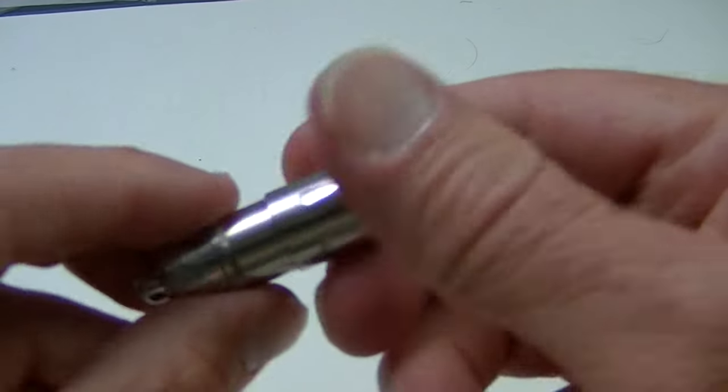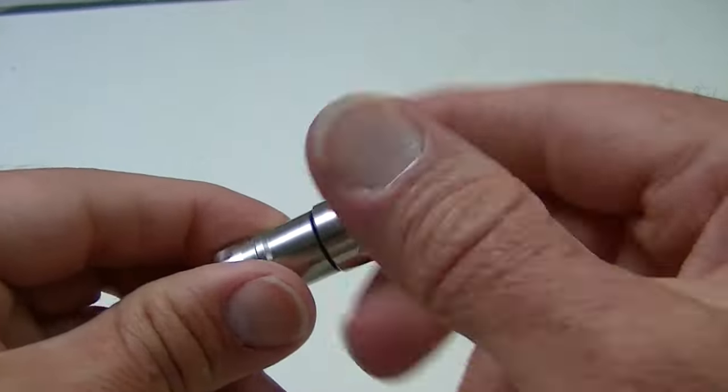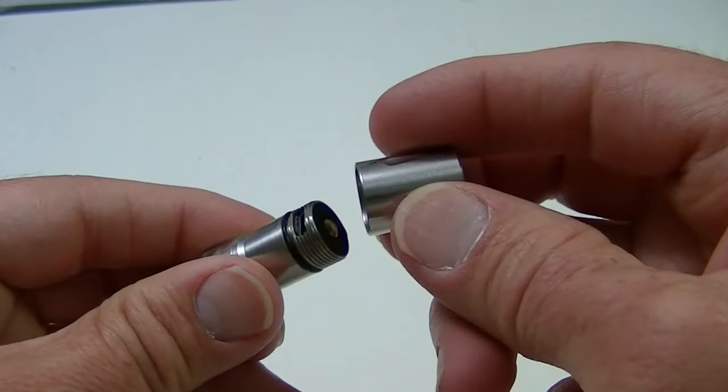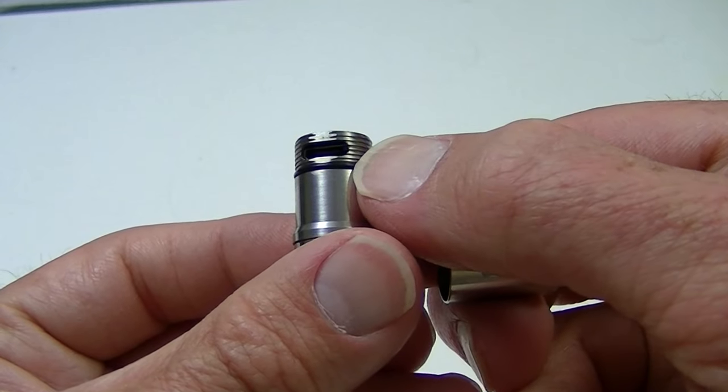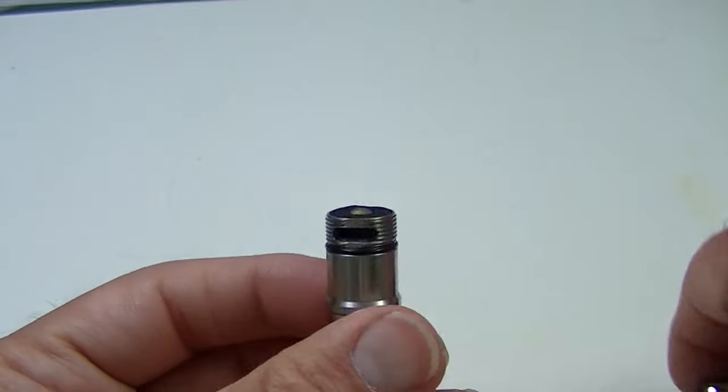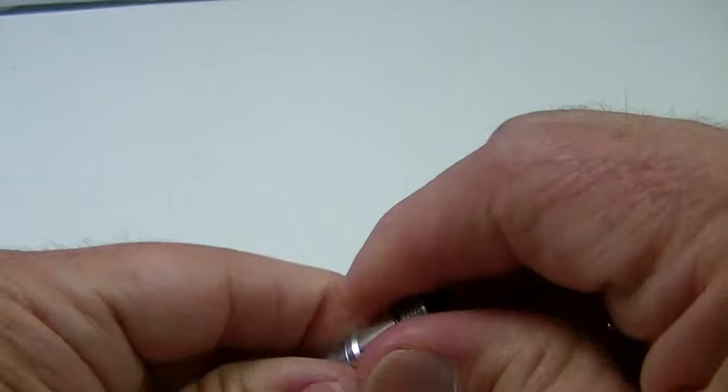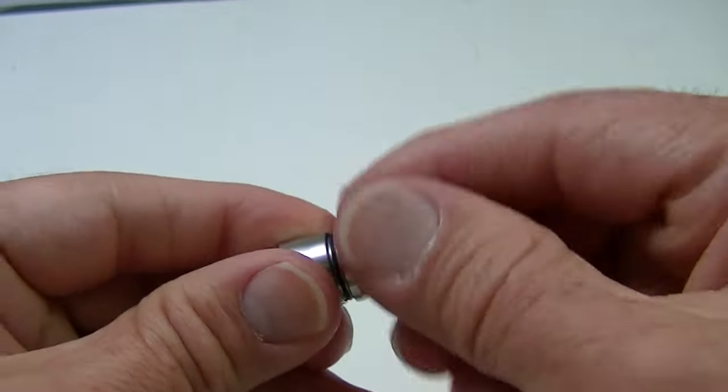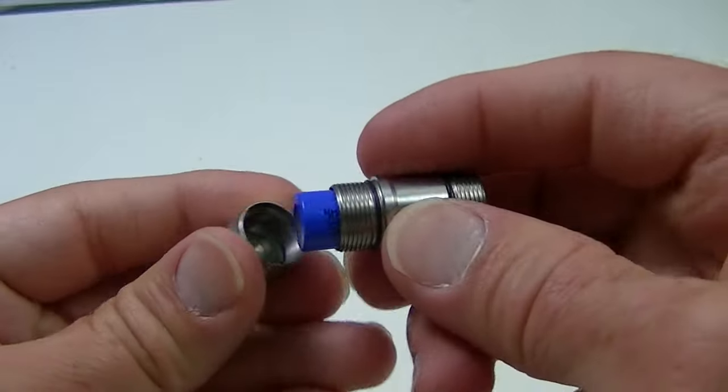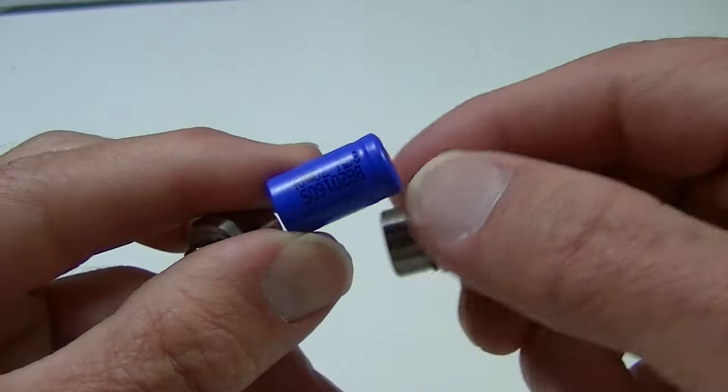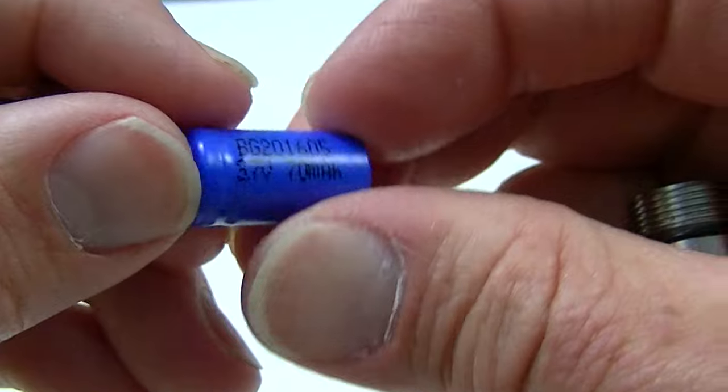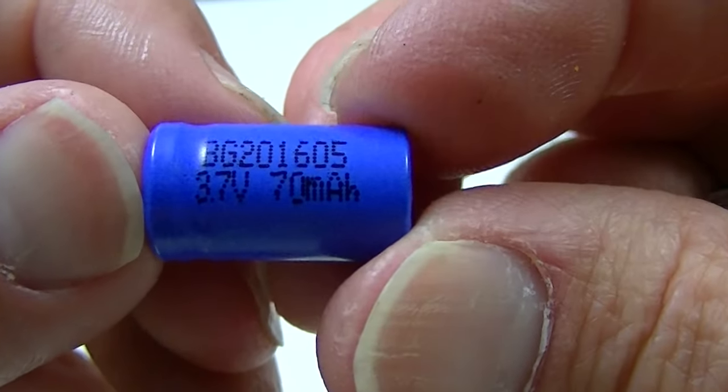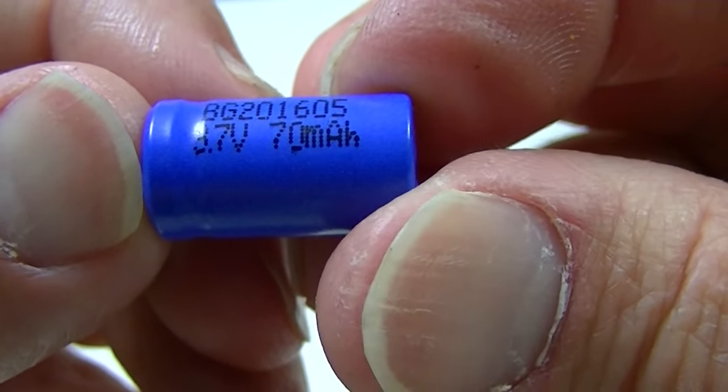The battery it uses is one of those teeny tiny little guys. I believe they're 10440, I think they're called. Let's take the light apart. The battery is already in here. There's your charger, there's your USB port right there, and here is the battery.